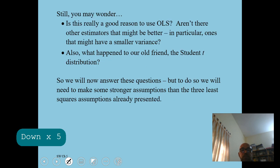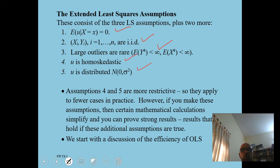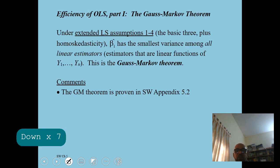We now have two additional assumptions: ui is homoscedastic, and ui is normally distributed. These give us four to five main assumptions total. Even if ui is not normally distributed, for large samples beta 1 hat is approximately normally distributed by the central limit theorem.